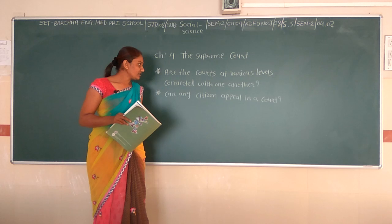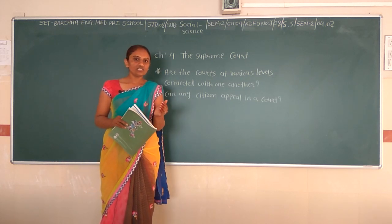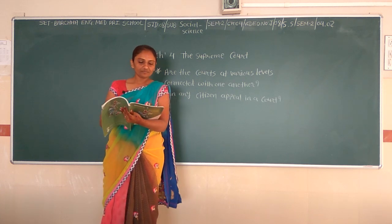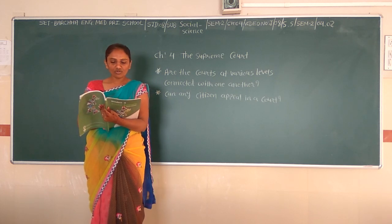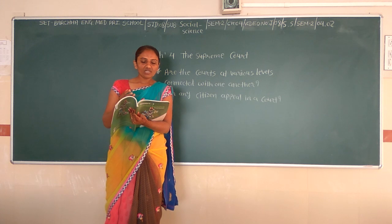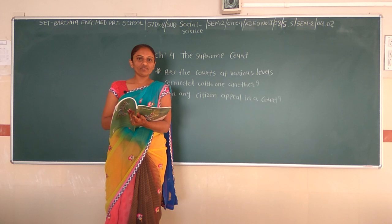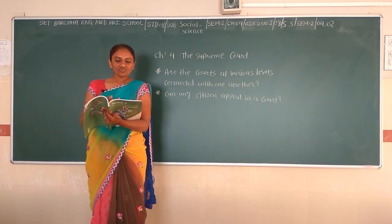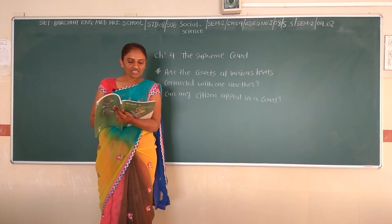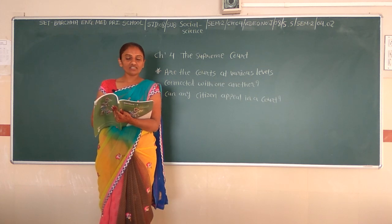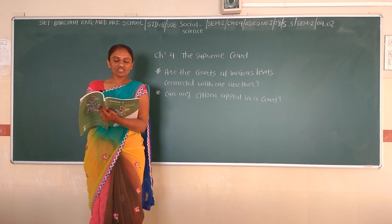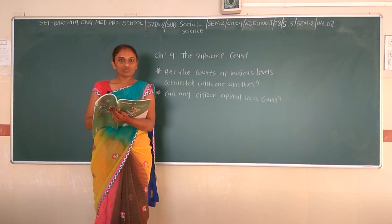Now the next point: can any citizen appeal in a court? We have learned that any citizen can appeal in a court for the protection of his or her fundamental rights. But in reality, poor people find it very difficult to go to court. The legal process not only requires a lot of money and paperwork but is also very time-consuming. For a poor person who is illiterate and has an irregular income, it becomes really tough to go to court and demand justice.